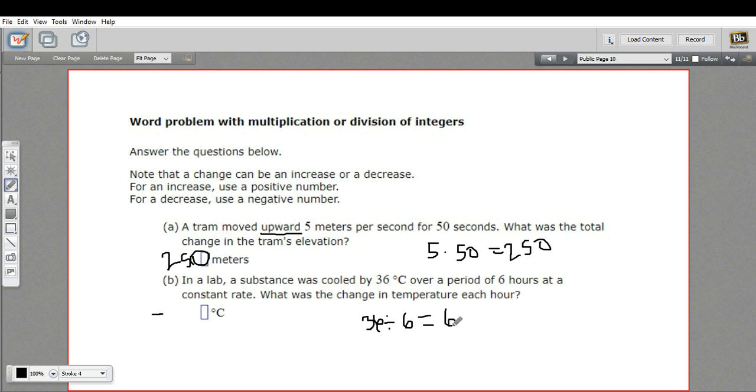That's pretty easy. That's six degrees per hour. But since it's cooling, it's going down six degrees per hour. The change then would be negative six degrees Celsius each hour.